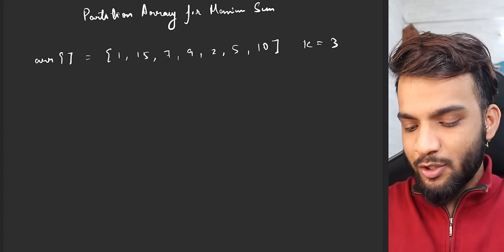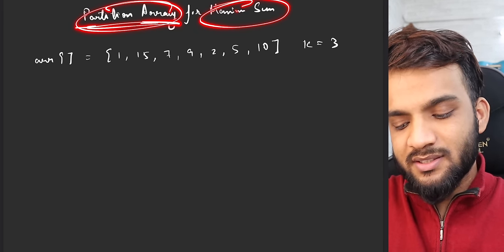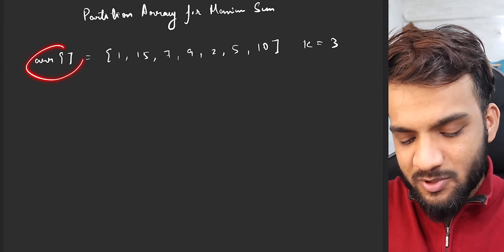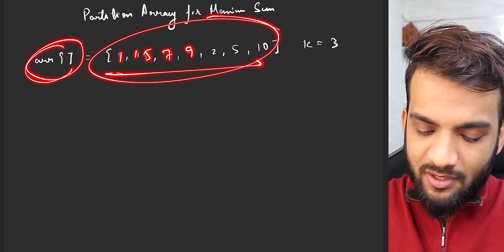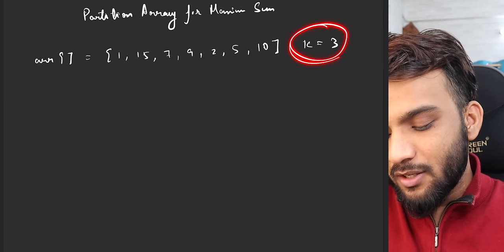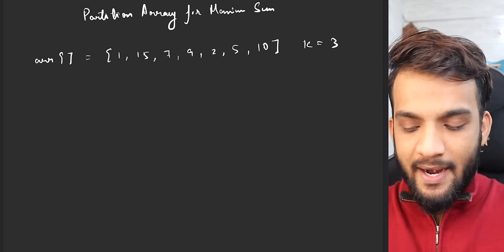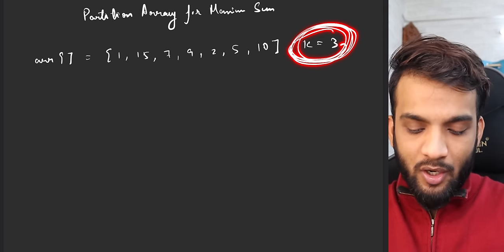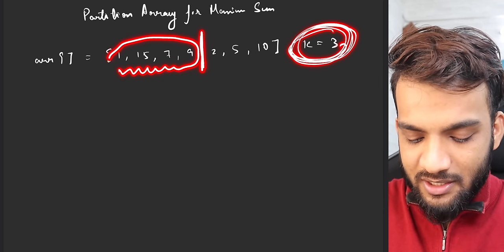Welcome back. Today we will be solving the problem 'Partition Array Such That You Get the Maximum Sum'. The problem gives you an array like [1, 15, 7, 9, 2, 5, 10] and a value k. You need to partition the array such that none of the partitions have more than length k — for example, you cannot have a partition with four elements if k equals 3.